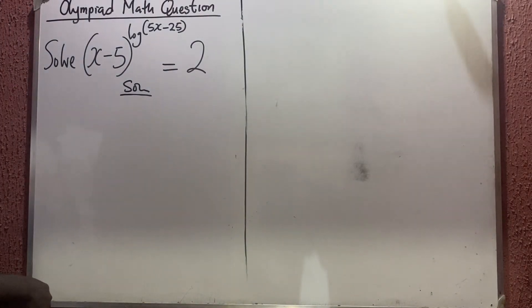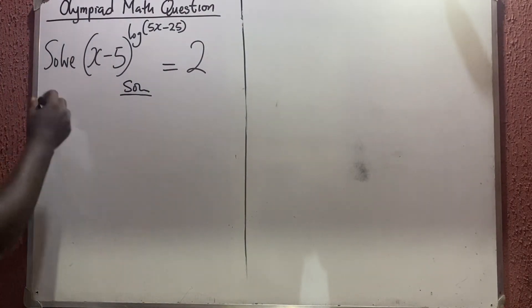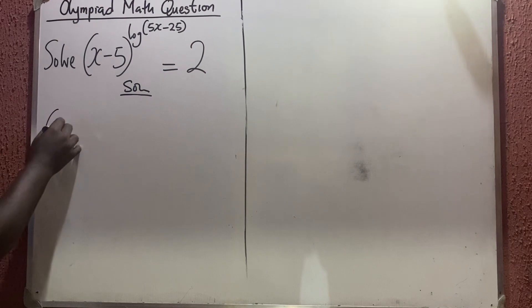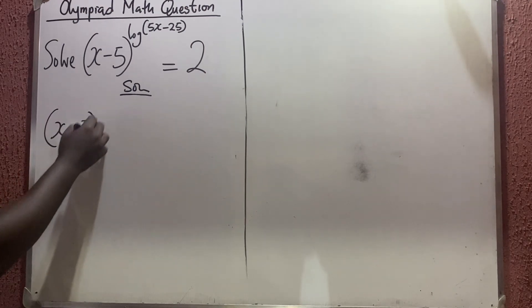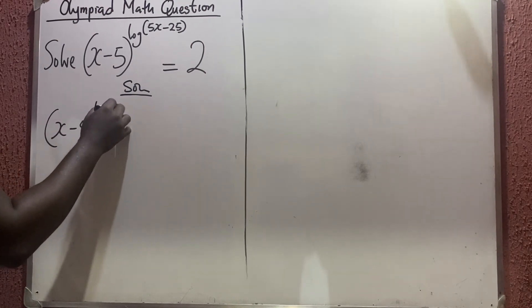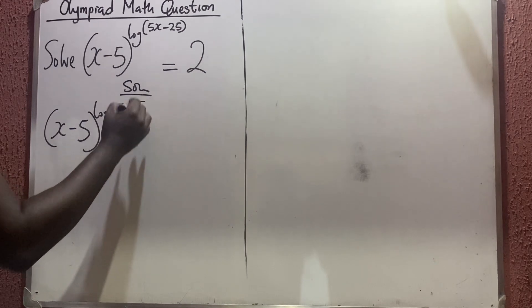All right, so let us quickly solve this Olympiad math problem. We are given (x-5) raised to the power of log(5x-25) equals 2.